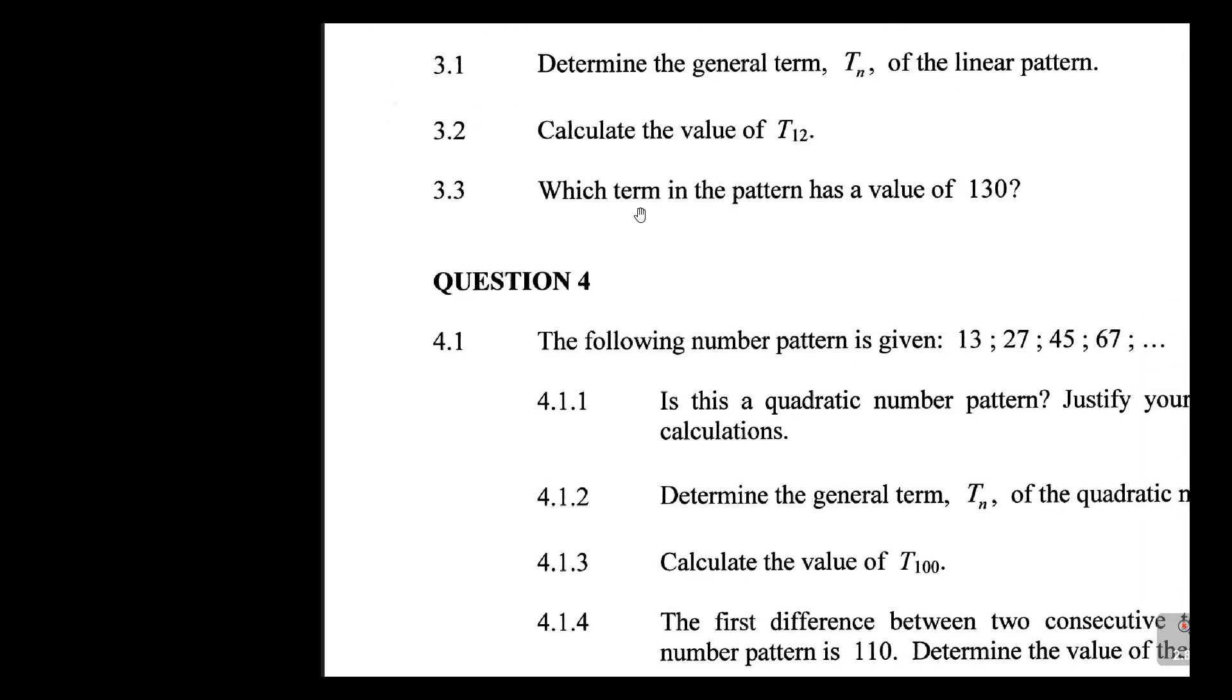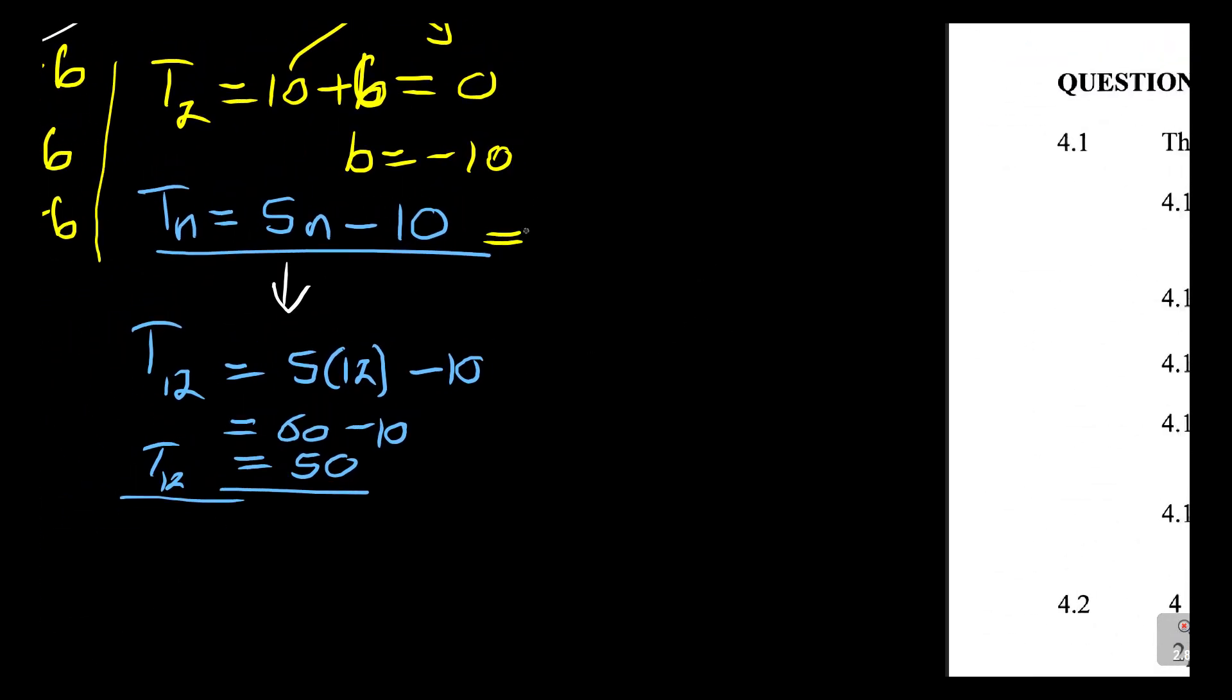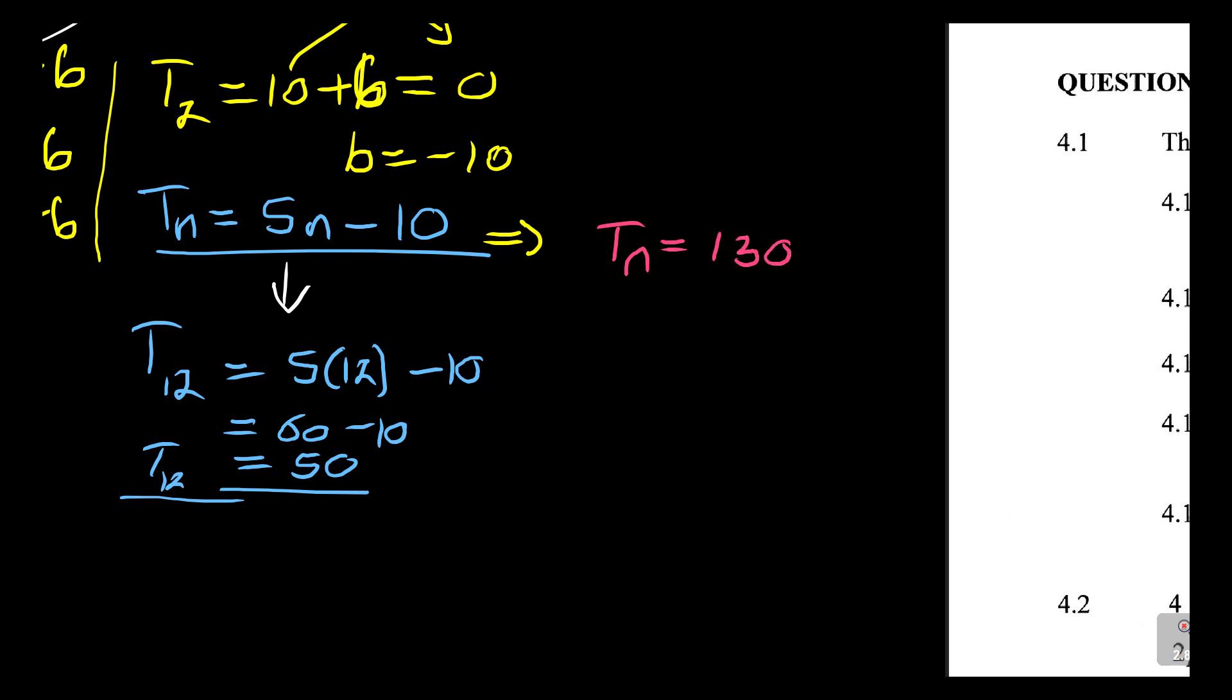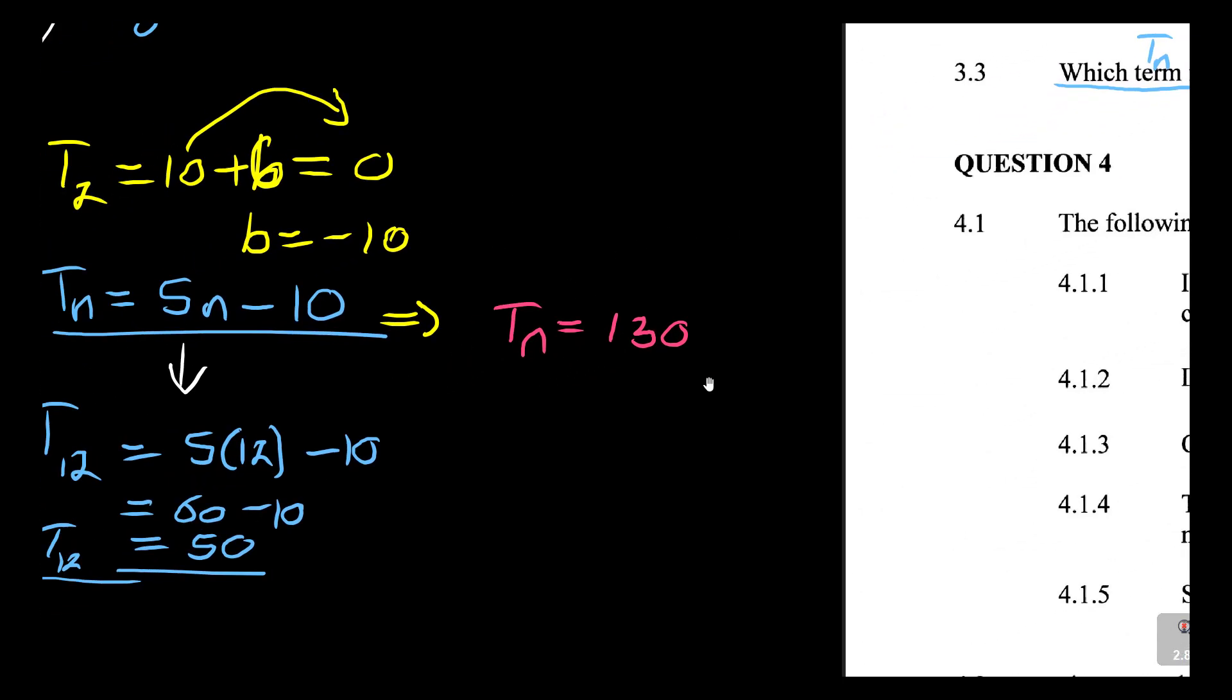And then the other one, which term in the pattern has a value? Which term? So when they say which term, here they say calculate the value of T12, so this is term 12. But now if they say which term in the pattern is a value, so we want TN because we don't know that term. So what you do, you come to your formula here to say, all right, now I'm looking for TN. So it will be, in this scenario, TN, remember, is equal to 130. That's what they're saying here. Which term TN in the pattern has a value of 130? So we want the nth term. So TN is 130. So what you do here, you are saying 5N minus 10 will give me 130.